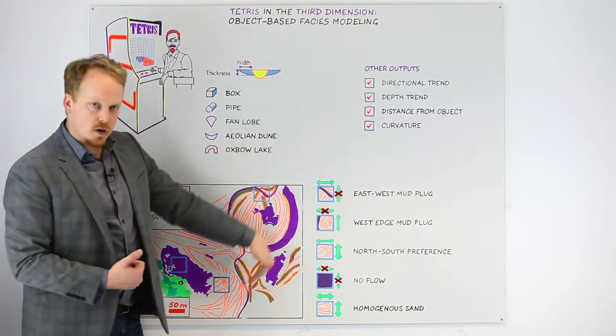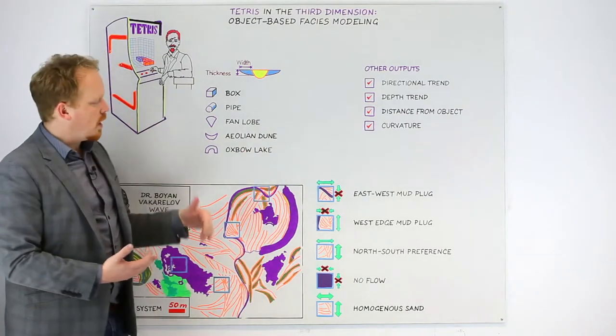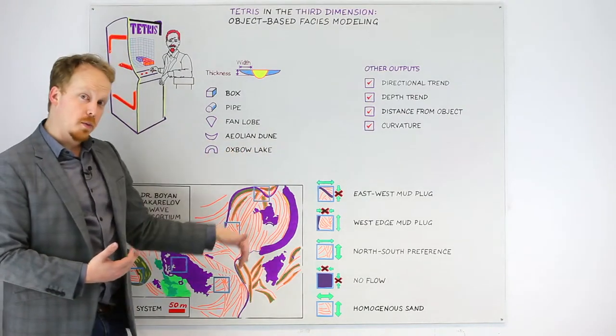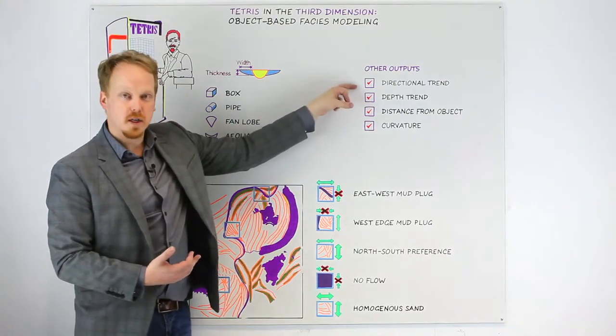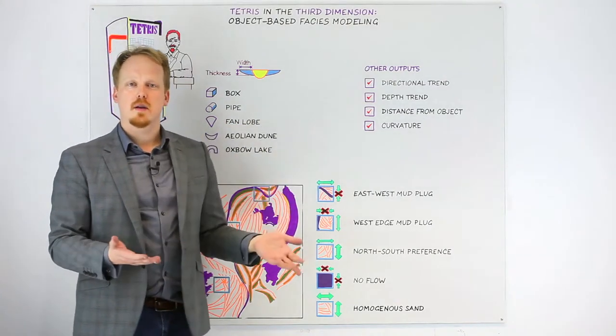Well, if I knew that I had an oxbow lake coming around the edge, then I could preserve that permeability in the direction of the object is high, but counter to it is low.